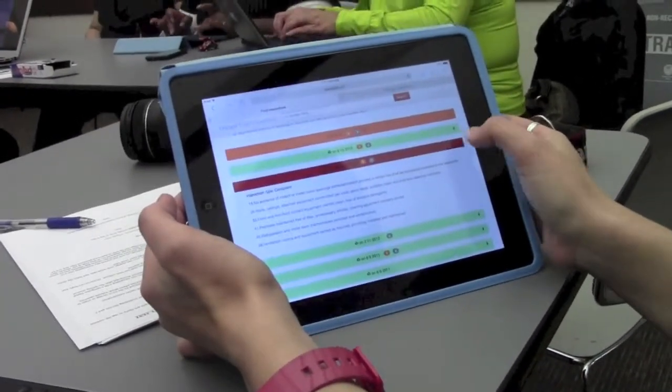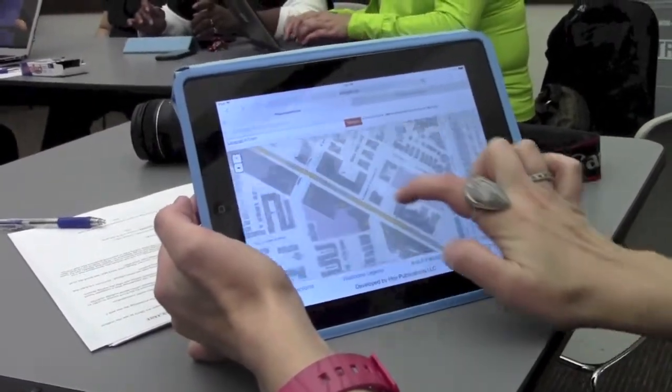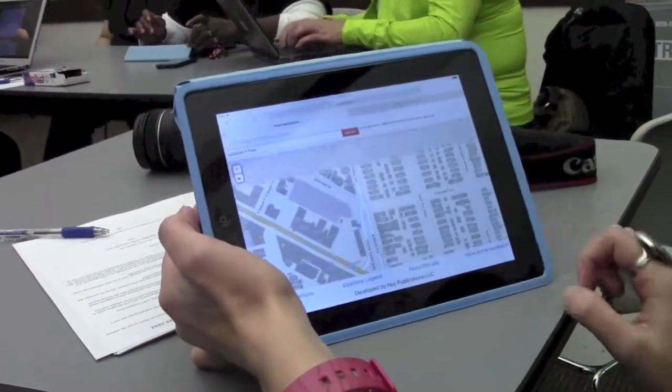So you were able to achieve your objective by searching by name for the place. Yes. You were never able to achieve your objective by scrolling on the map. Correct. Because it's not even on the map.